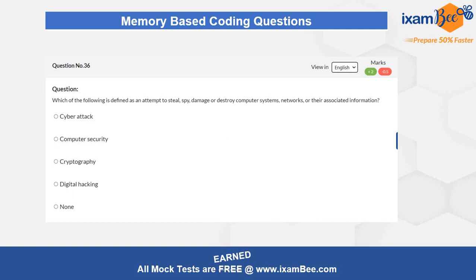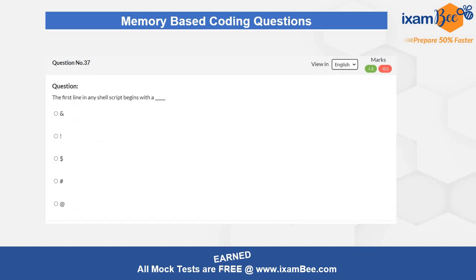Question six is related to cyber security, asking which of the following is defined as an attempt to steal, spy, damage, or destroy a computer system, network, or associated information. This question is very easy — they are just using different keywords to create confusion, but if you know the basic concepts you will answer it correctly. Question seven is related to shell scripting, asking what is the first thing that happens in the shell so that it begins its statement — again a factual question.